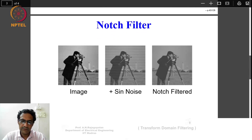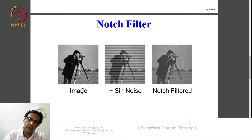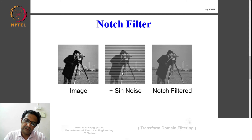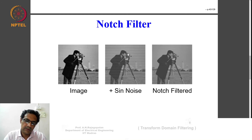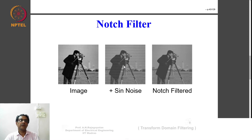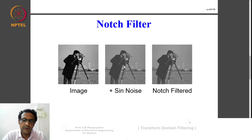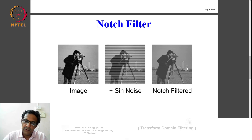Now look at this notch filter example — here Fourier domain filtering makes a lot of sense. You have an image, and when you add single-tone noise you get a regular pattern all over the image. Removing this kind of noise using spatial domain filtering would not be straightforward, whereas doing it in the Fourier domain makes a lot of sense because this single-tone noise appears as a spike in the Fourier domain. You just suppress that particular frequency and, after reconstruction, you get the filtered output.